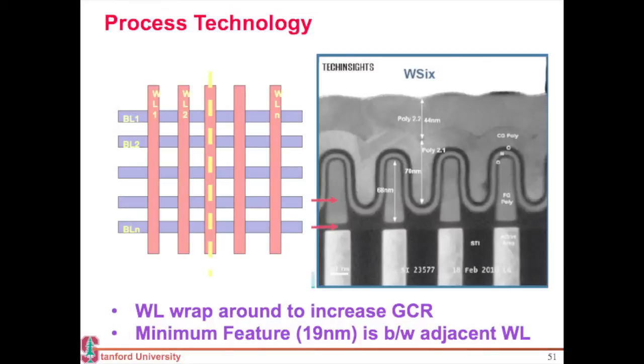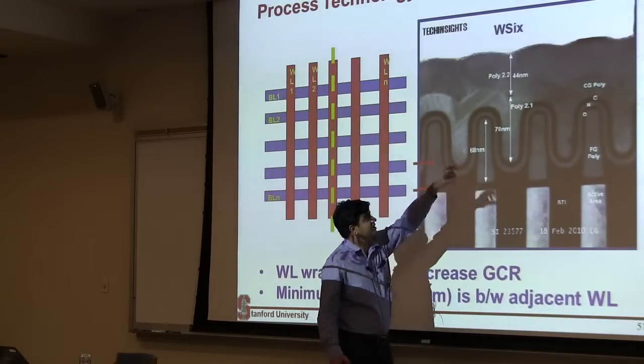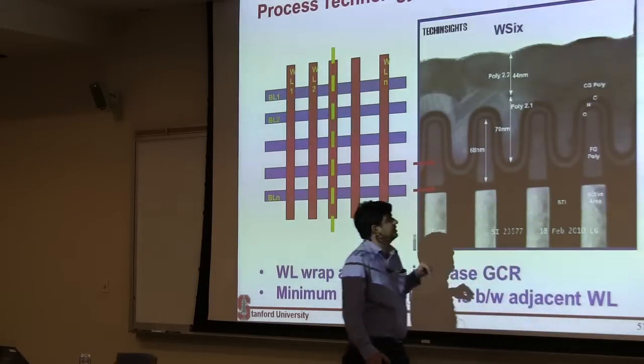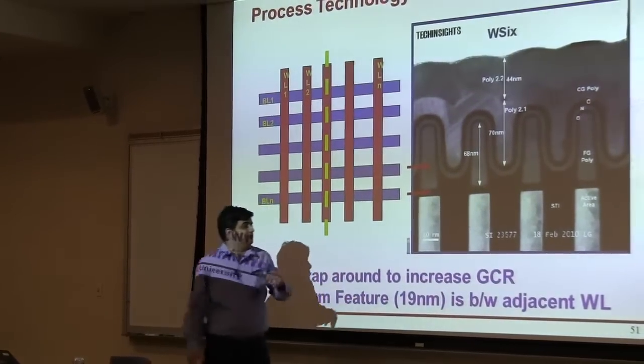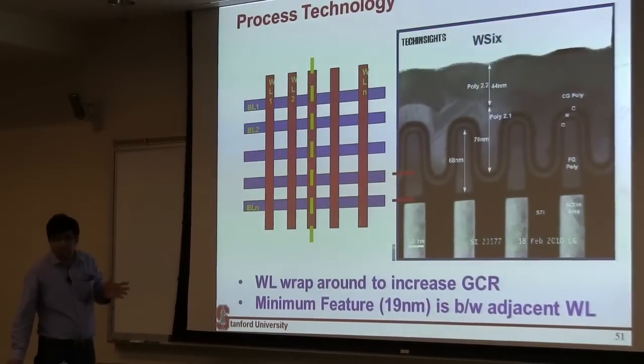Now you can see one, two, three, four of these STIs standing out, and then you have your tunnel oxide over here. This is your floating gate, and then you can see this ONO dielectric, or your control gate on top of that dielectric, wrapping on top of these cells.